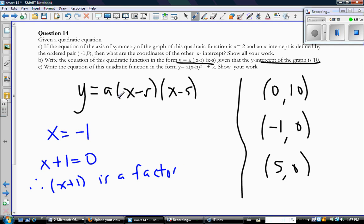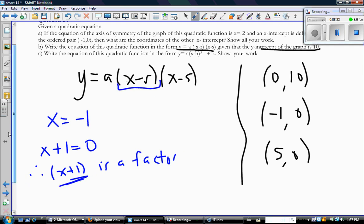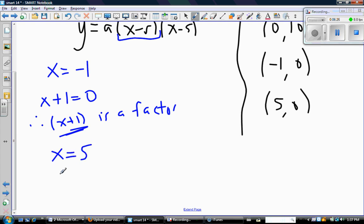So this bracket here will be replaced with x plus 1, because that's a factor. Same thing with the other root. I know that x equals 5, so x minus 5 must equal 0, and so therefore x minus 5 is a factor.